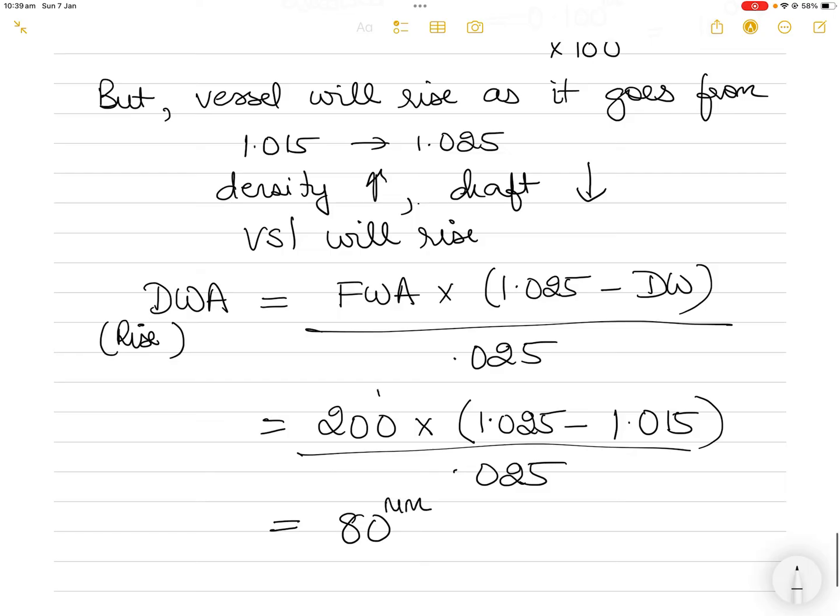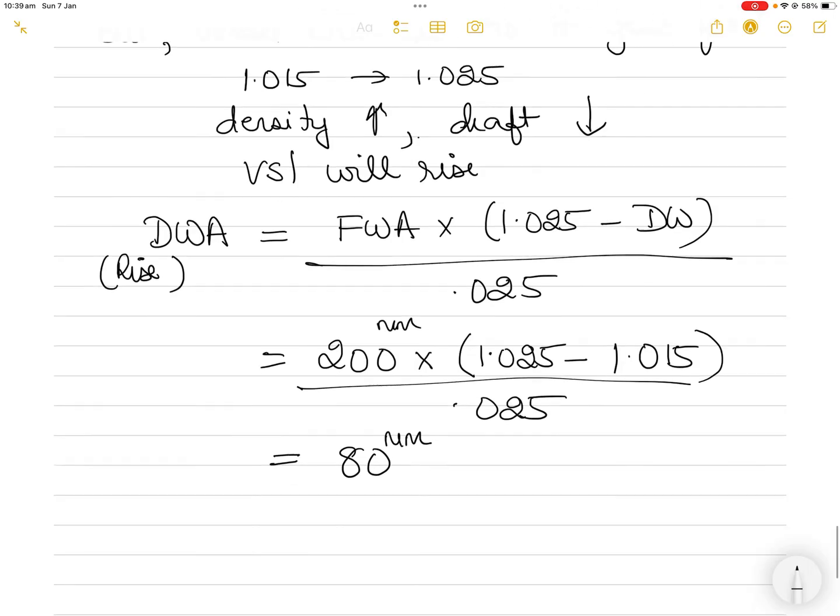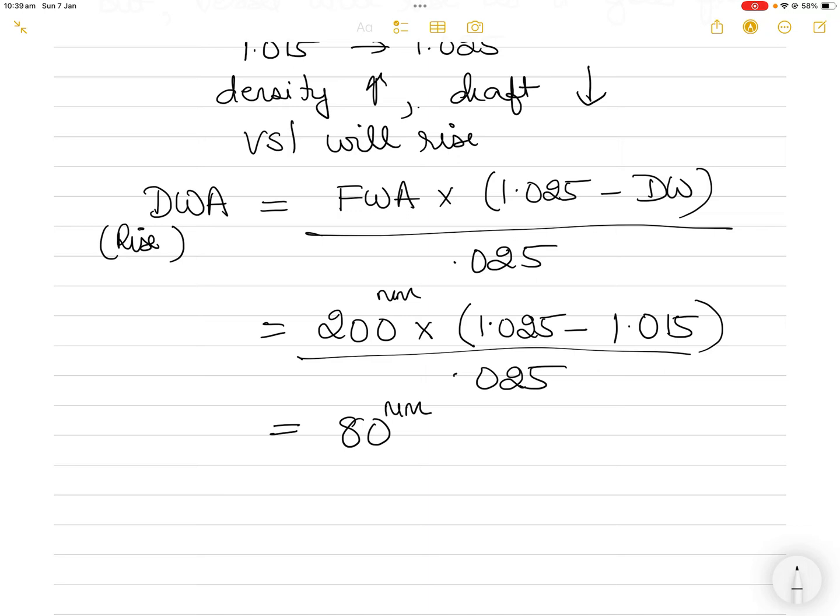This gives a dock water allowance of 80 millimeters. I'm getting the answer in millimeters because I used freshwater allowance in millimeters. Converting to centimeters by dividing by 10 gives 8 centimeters.